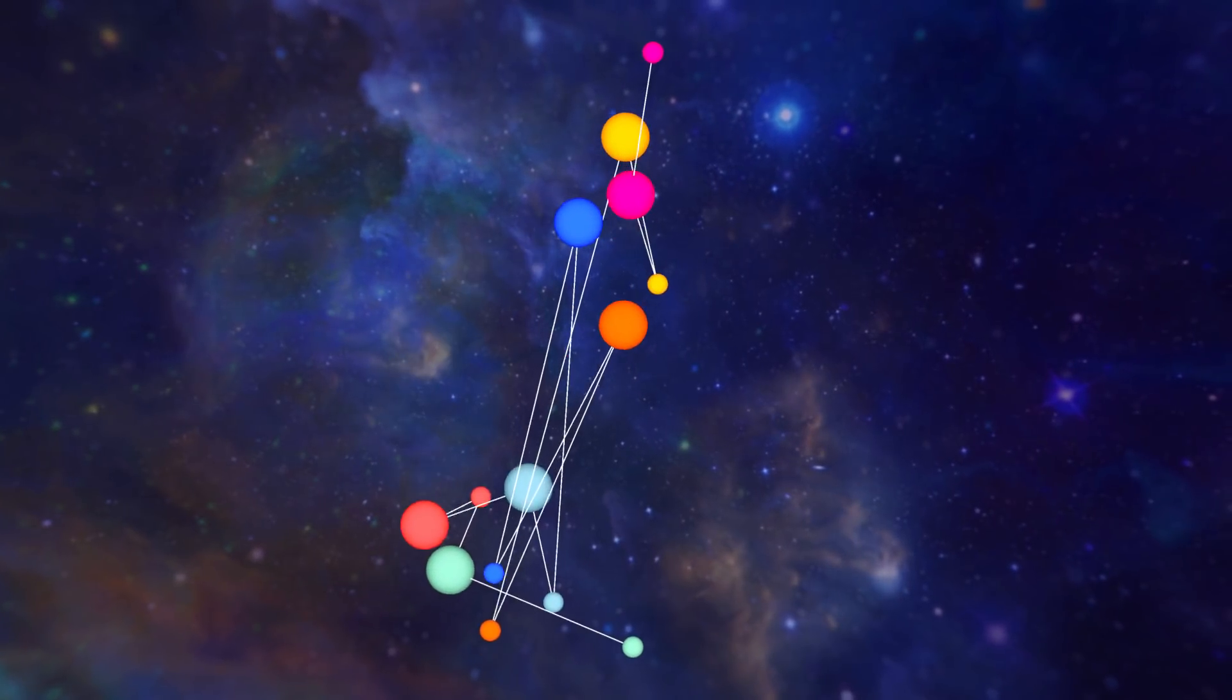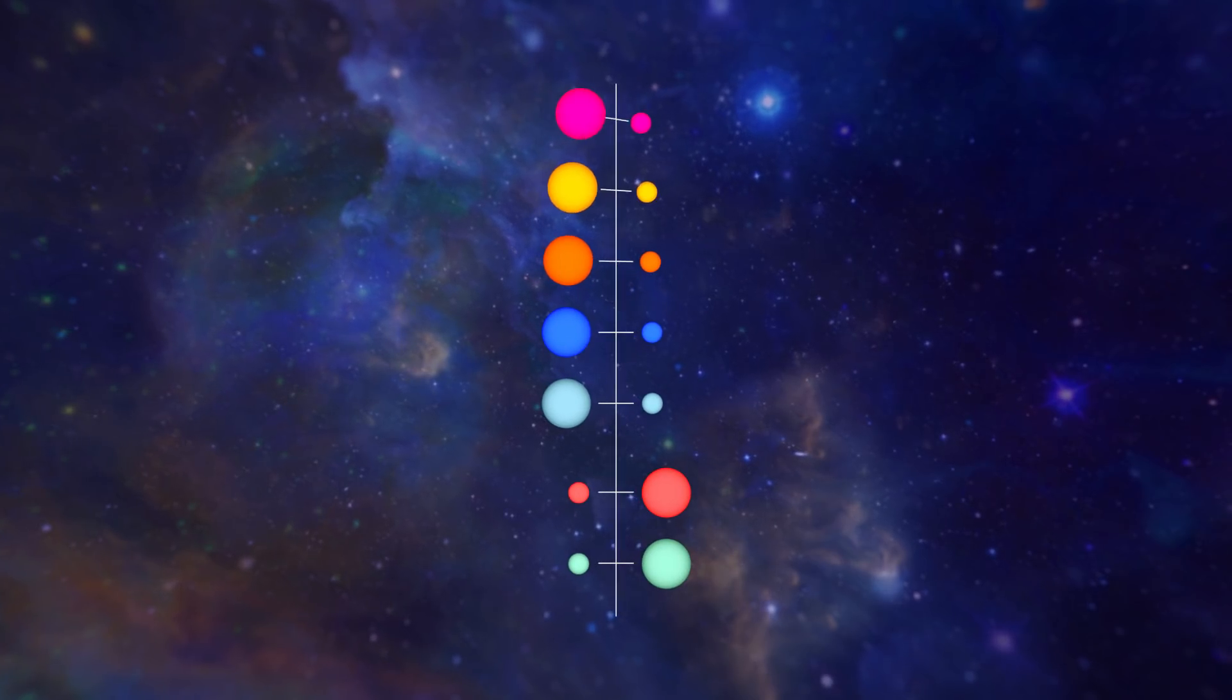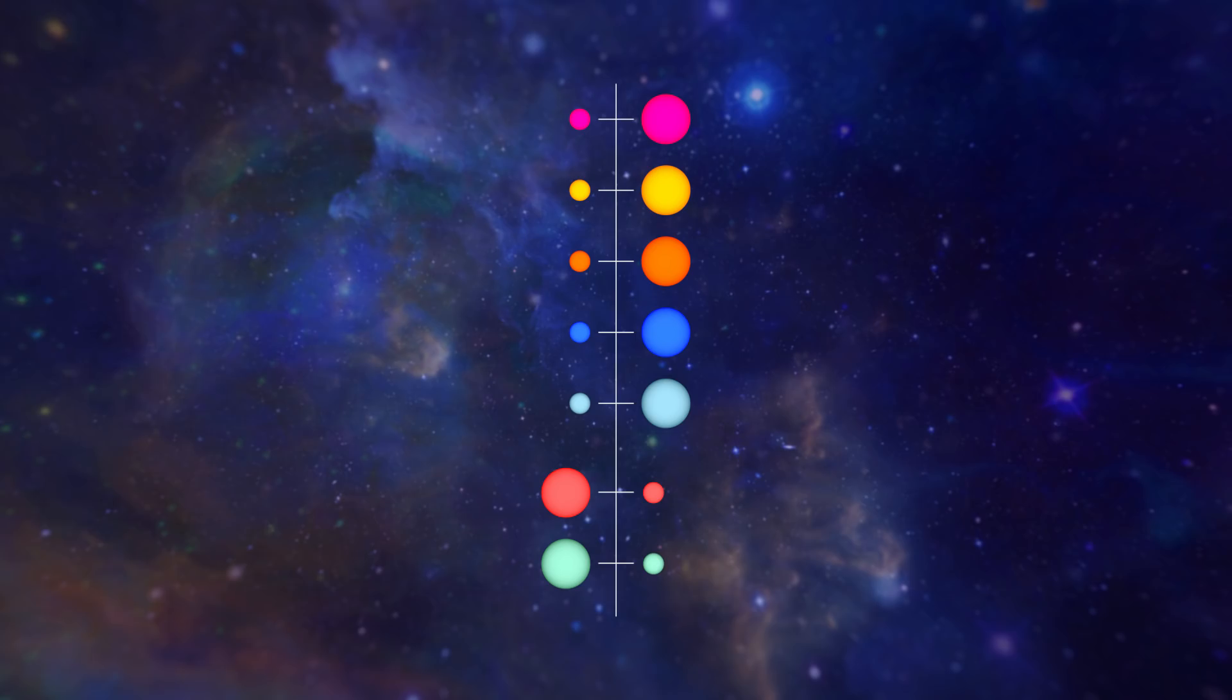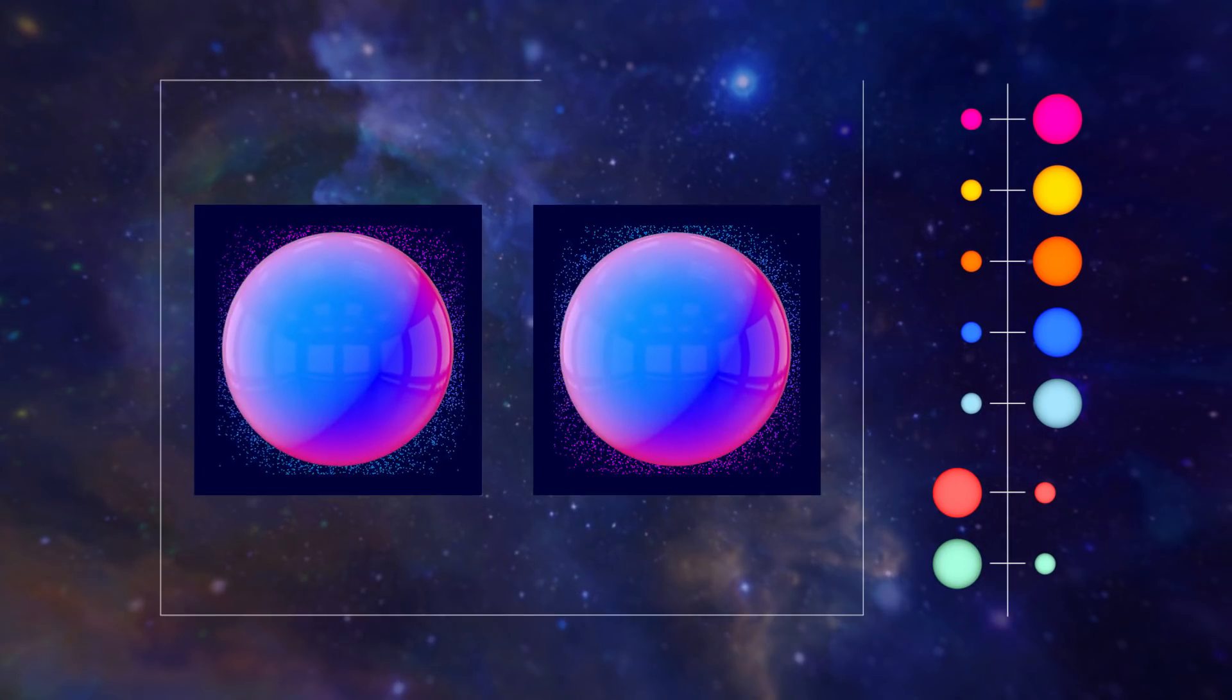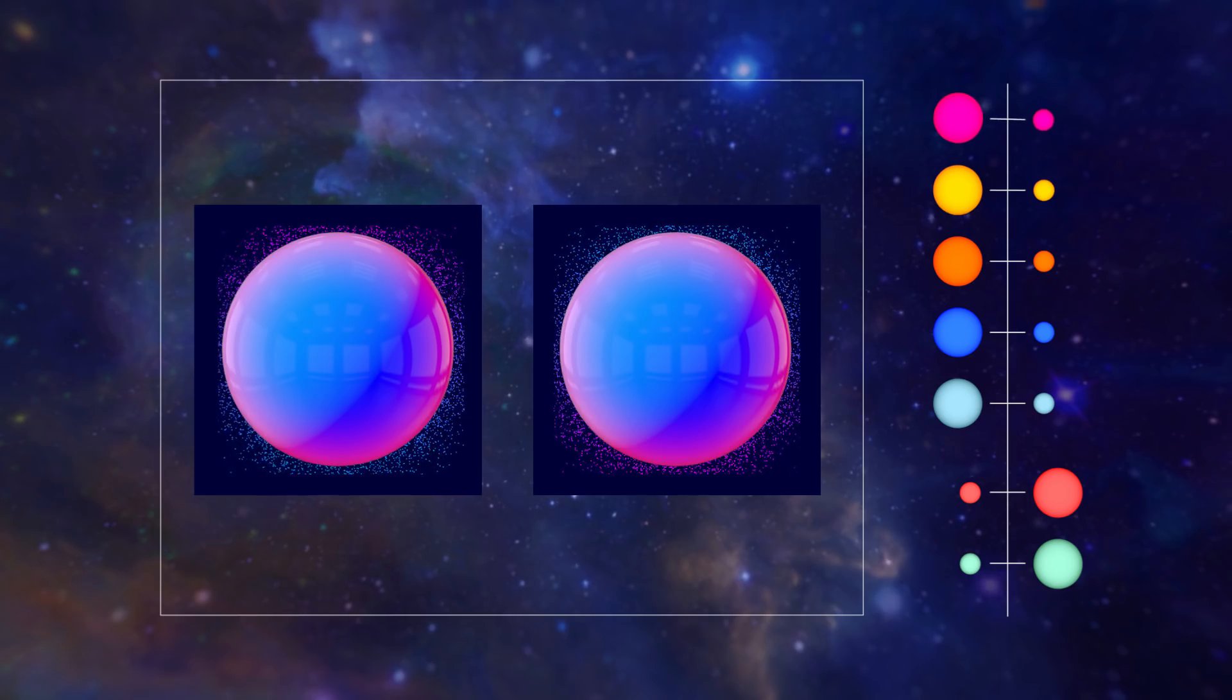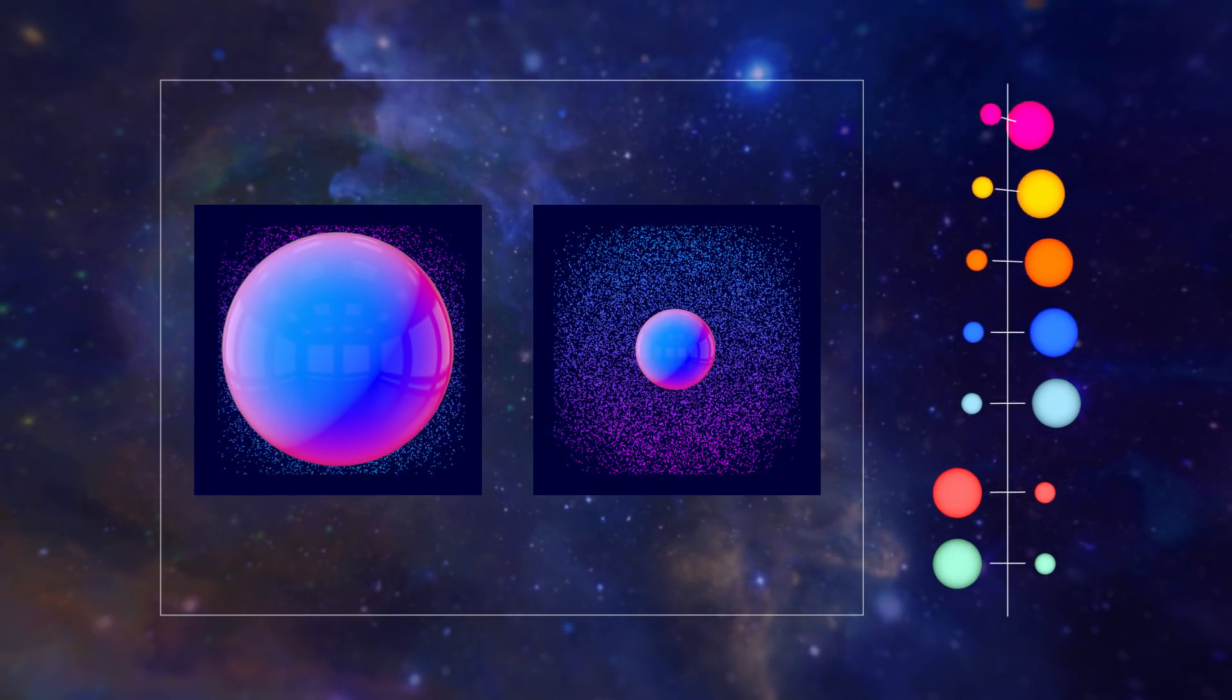Supersymmetry predicts that every single standard model particle has a supersymmetric partner particle of the opposite type. The partners of fermions are bosons, and the partners of bosons are fermions. We'll come back to all of this in detail another time. But the one property that's relevant for today's episode is that these supersymmetric particles are all expected to be way more massive than their known partners in the standard model.